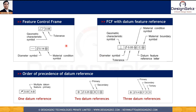There are different feature control frames you will see in engineering drawings. The first one shows a form control with two blocks. The diameter modifying symbol shows a cylindrical tolerance zone, whereas M shows the material condition modifying symbol, meaning the tolerance is applied at that material condition. A feature control frame can have 0, 1, 2, or 3 datum references.